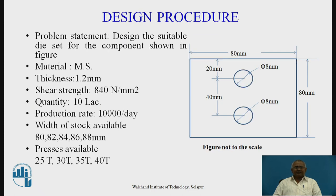To study the design procedure, first of all we have to define the problem. The component shown in the sketch is a square blank of 80 by 80 mm size, with two holes pierced in it of 8 mm diameter, having a central distance between them equal to 40 mm. The rest of the dimensions are shown in the sketch. For manufacture of this component, it is necessary to design a die set which is economical.